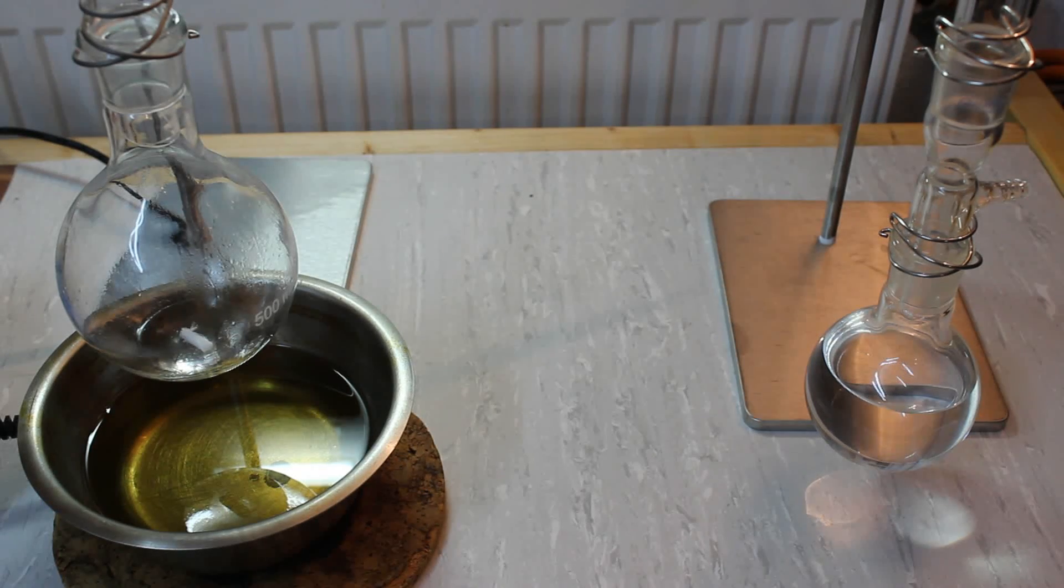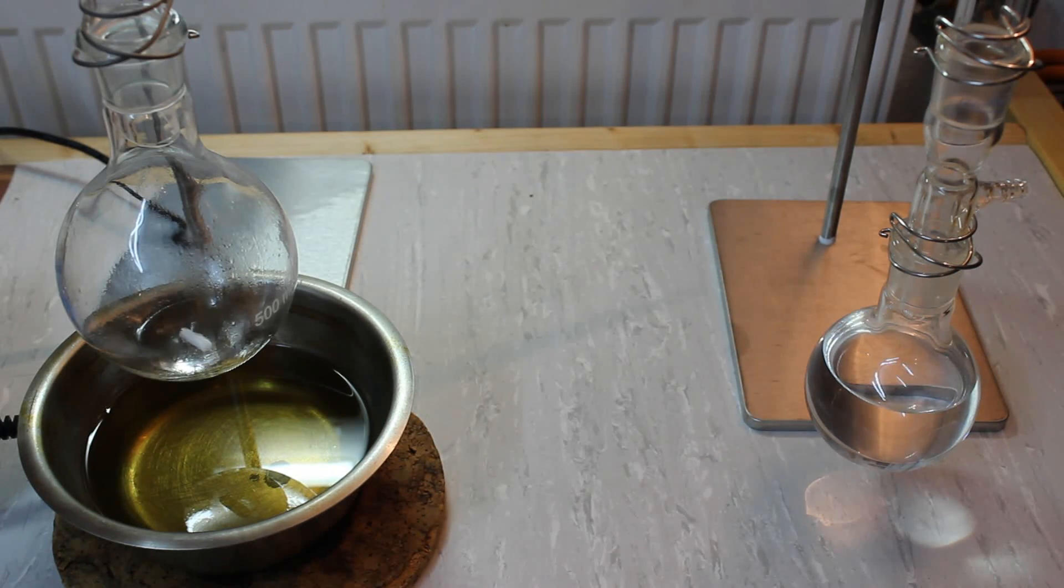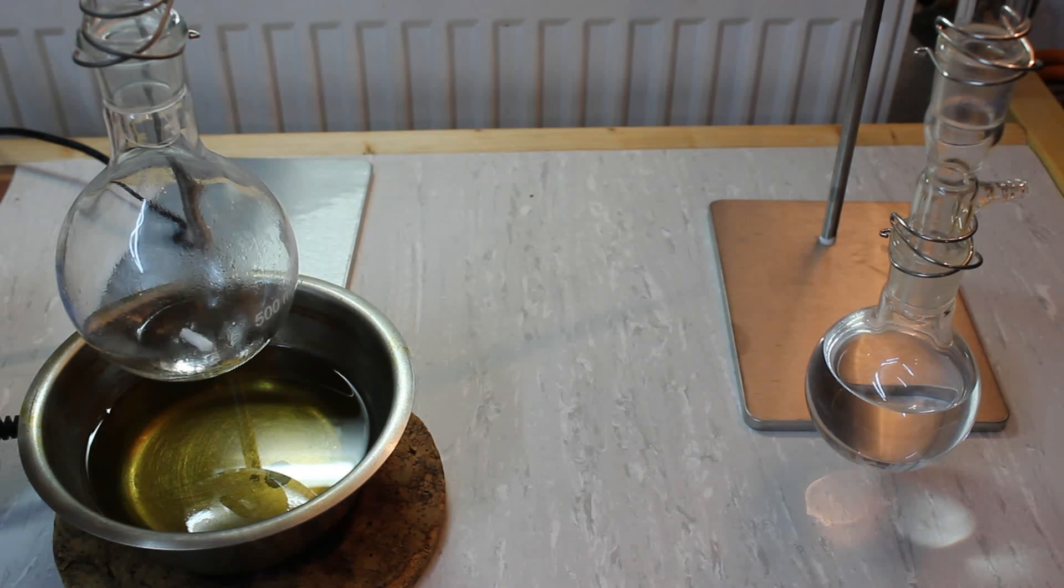I've stopped the distillation and in the boiling flask we're left with a little residue. The still head temperature constantly remained at around 55 to 56 degrees Celsius, so this indicates our acetone was pretty pure to begin with.